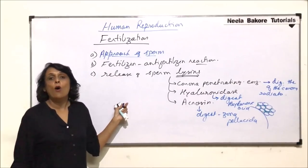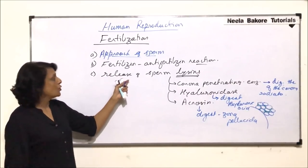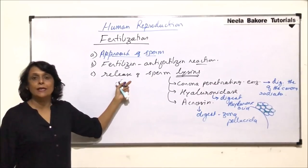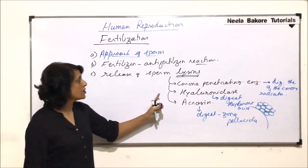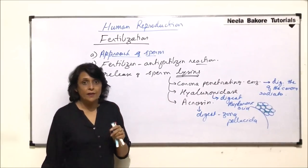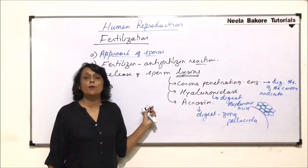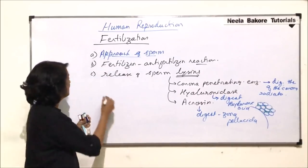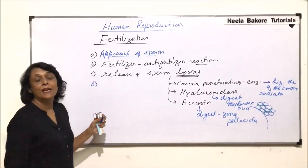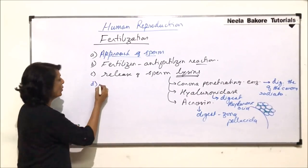Sperms always enter through the animal pole. So here the lysins have been released and this is possible because the acrosome membrane was made weaker. It was made weaker in the female reproductive tract by the process of capacitation.